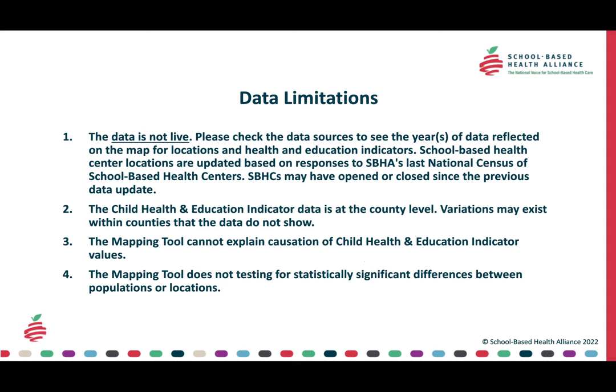There are a few data limitations to note about the tool. It's important to be aware of what it can do, but also what it cannot. The data is not live, so please check the data sources to see the year of data reflected on the map for locations and health and education indicators. School-based health center locations are updated based on responses to the school-based health alliance's last national census of school-based health centers. Schools and SBHCs might have opened or closed since the previous data update. Also, the child health and education indicator data is at the county level, and variations may exist within counties that the data does not show. The mapping tool also cannot explain causation of child health and education indicator values, and it does not test for statistically significant differences between populations or locations.